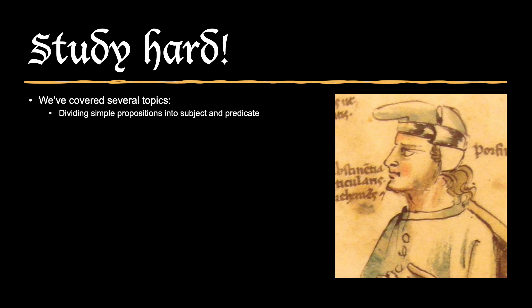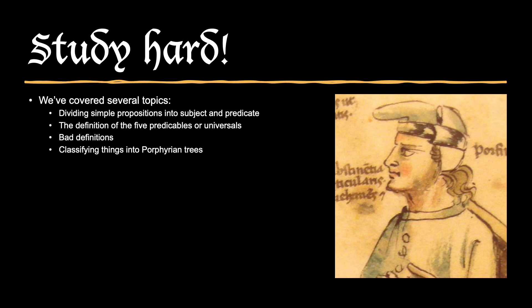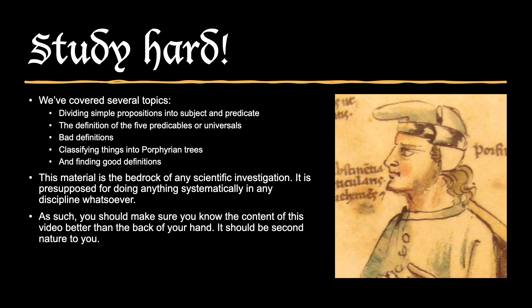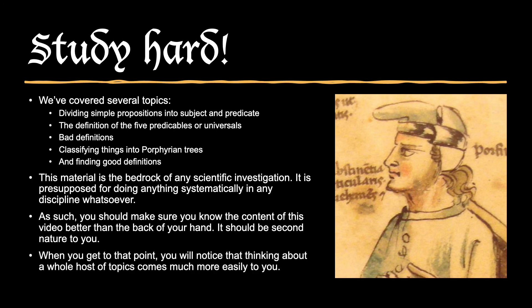We've covered several topics in this video: first, dividing simple propositions into subject and predicate; second, the definition of the five predicables as universals; third, bad definitions and how to avoid them; fourth, classifying things into Porphyrian trees; and finally, finding good definitions. This material is the bedrock of any scientific investigation—it is presupposed for doing anything systematically in any discipline whatsoever. You should make sure you know the content of this video better than the back of your hand; it should be second nature to you.